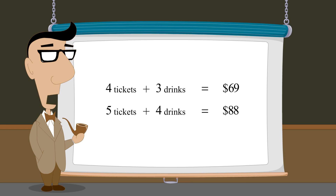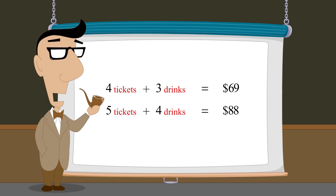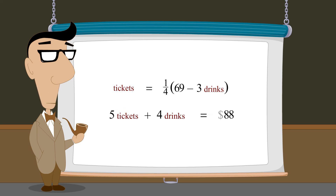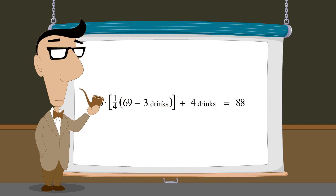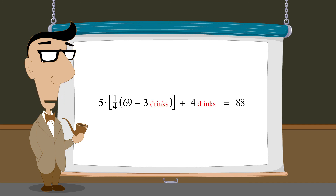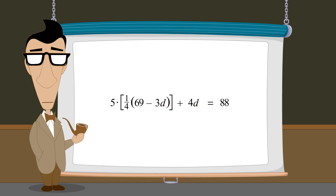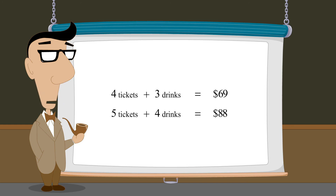So how could we have solved the same problem using a single equation with only one variable? In order to do this, we would have to write one unknown — either the price of tickets or drinks — in terms of the other, so that one variable can be eliminated. We could rewrite the first equation so that the price of a ticket is written in terms of the price of a drink, then substitute that expression into the second equation. But all we have done is eliminate one of the variables through substitution — essentially solving the system of two equations in two variables using the substitution method.